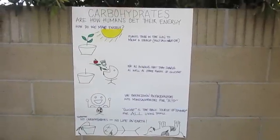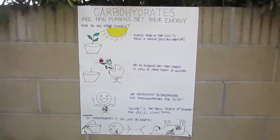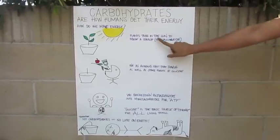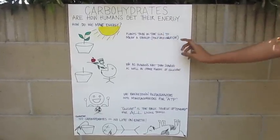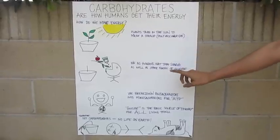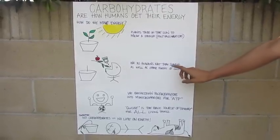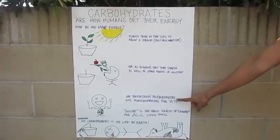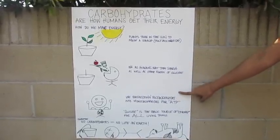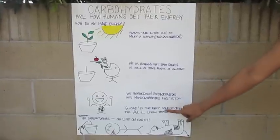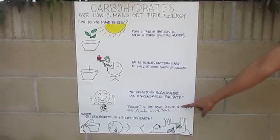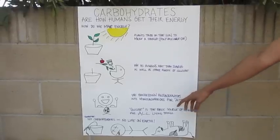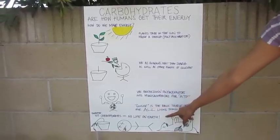Now that we have seen what an important role carbohydrates play in human life, we will see how this energy is made. Plants take in the sun to make a starch, like a polysaccharide. Then we as humans eat that starch as well as other forms of glucose. After that, we break down polysaccharides into monosaccharides for ATP. Glucose is the basic source of energy for all living things. Therefore, without carbohydrates, there would be no life on Earth.